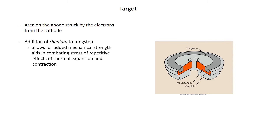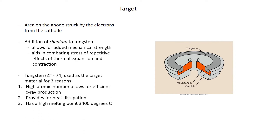Remember, when metal is heated it expands; when it's cooled, it contracts. Tungsten is used as the target material for three primary reasons: it has a high atomic number which allows for efficient x-ray production; it provides good heat dissipation; and it has a very high melting point of 3,400 degrees Celsius.